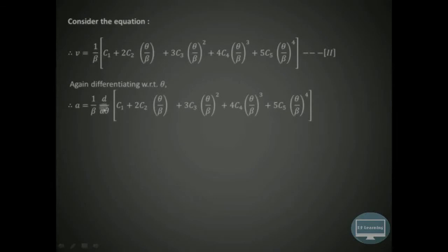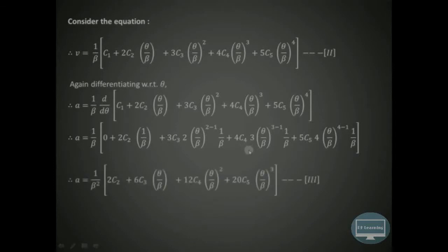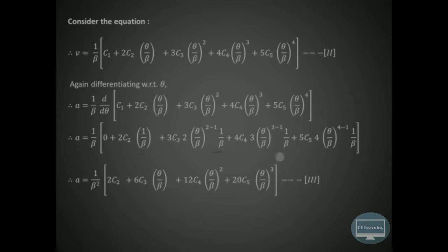Differentiating the velocity expression again with respect to theta to get acceleration: the derivative of the constant C1 is 0, derivative of (θ/β) is 1/β, and for (θ/β)² using the power rule and chain rule we get 2·(θ/β)·(1/β). Taking 1/β as common again, we already have 1/β from velocity, so we get 1/β² overall. The acceleration equation becomes: A = (1/β²)·[2C2 + 6C3·(θ/β) + 12C4·(θ/β)² + 20C5·(θ/β)³].